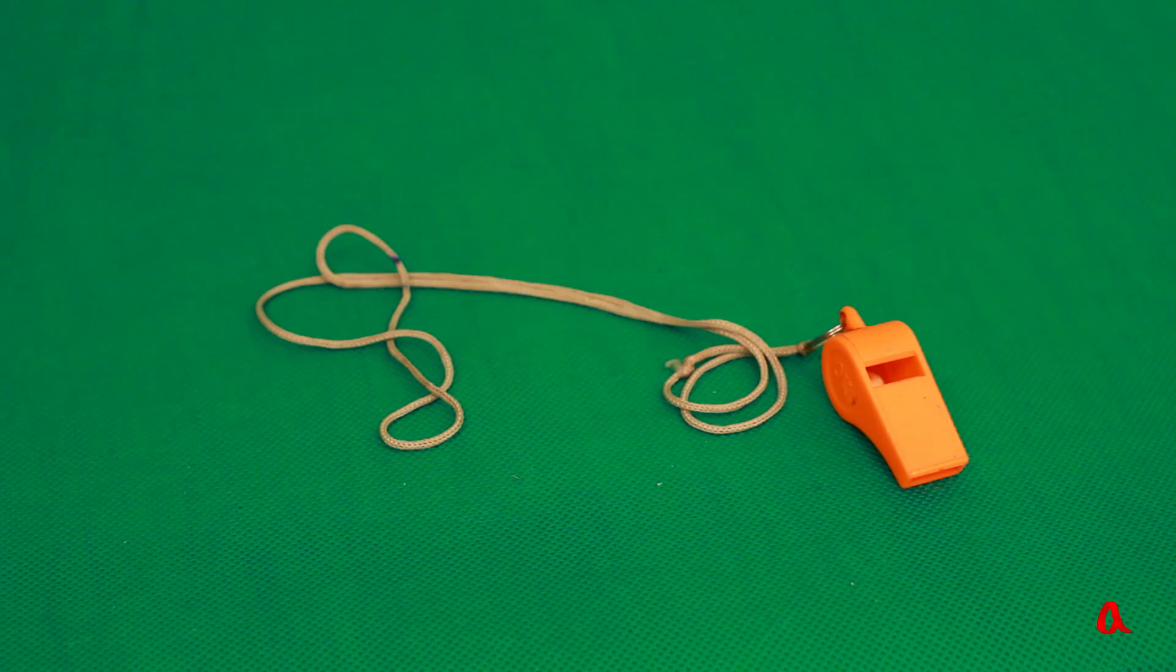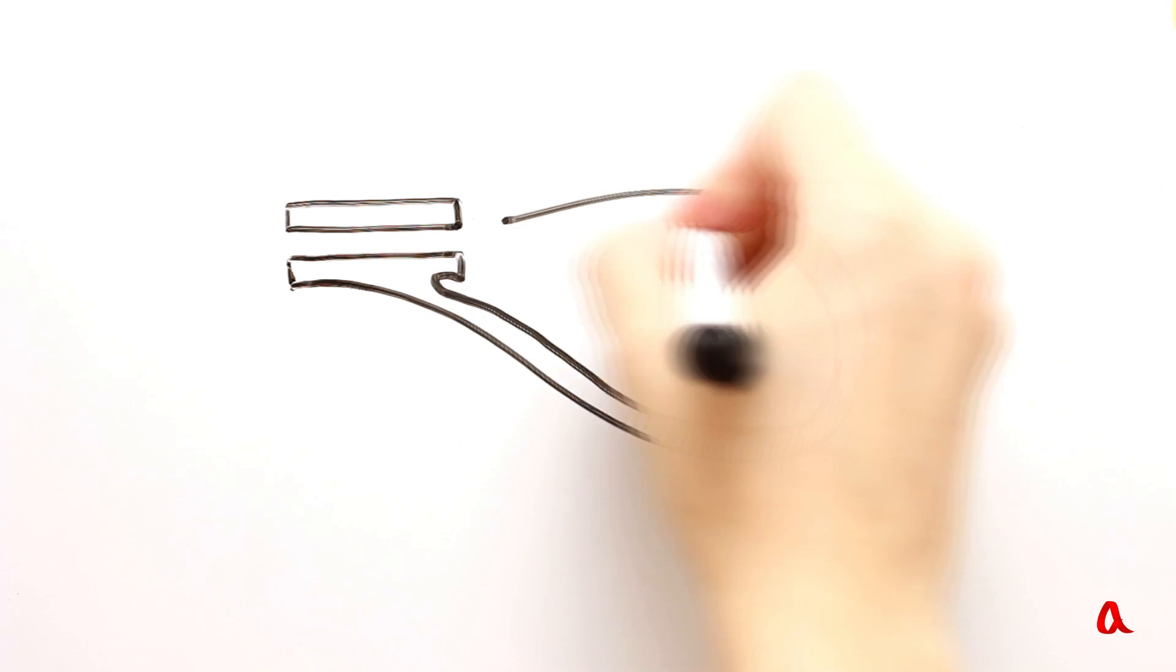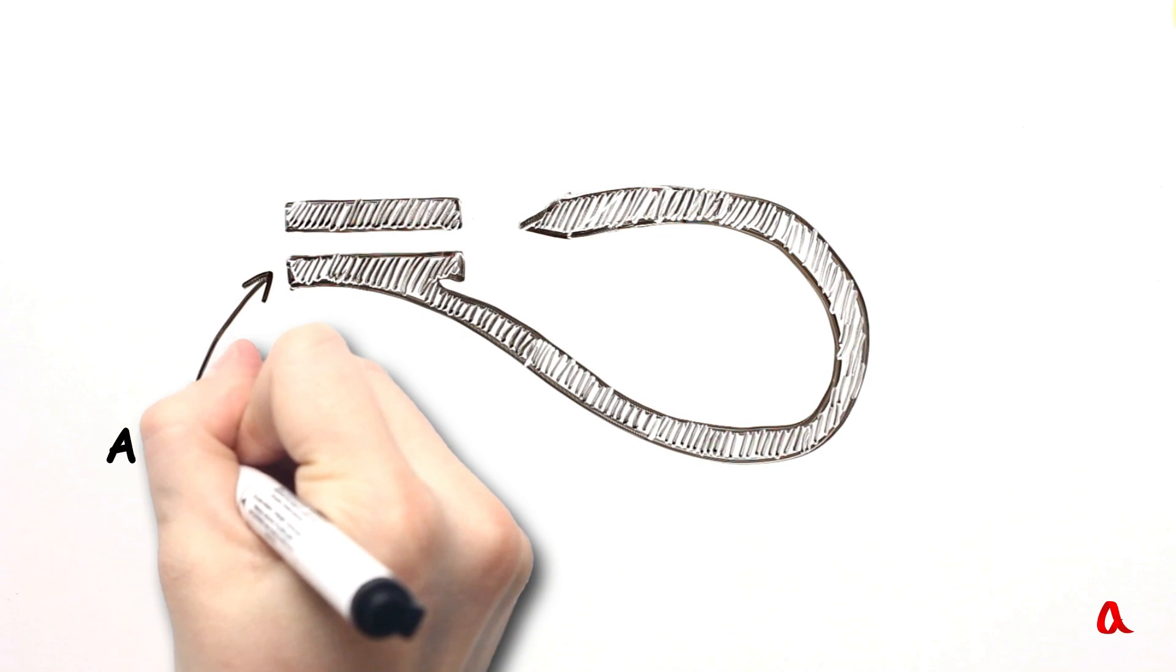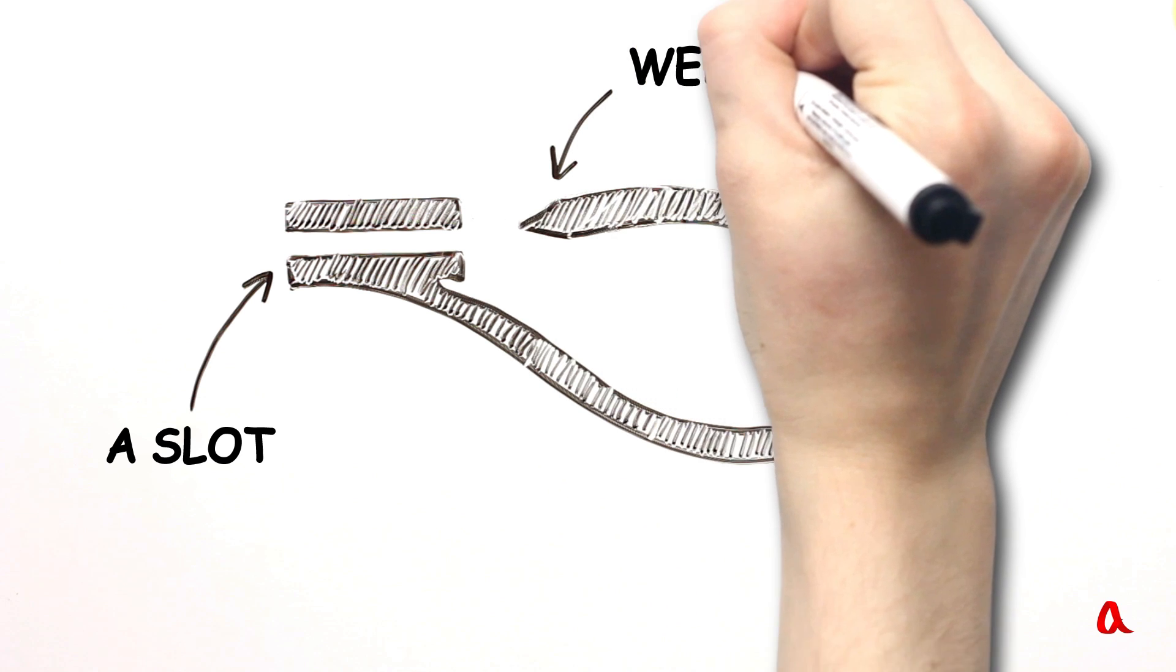How does a whistle work? It has no membranes or rubber bands that could vibrate. So where does colliding with air, which creates the sound, come from? A whistle consists of three parts. A slot, a wedge and the inner cavity or resonant chamber.